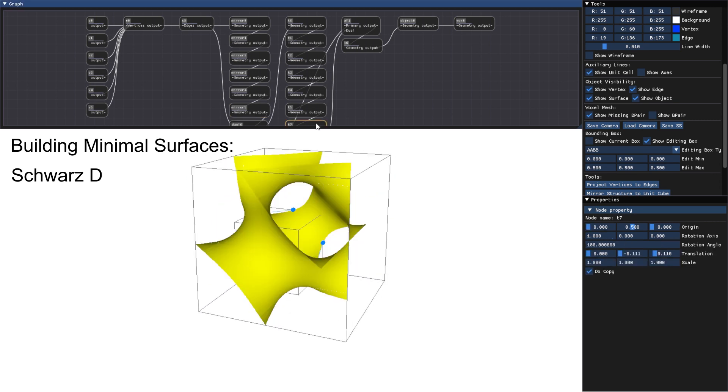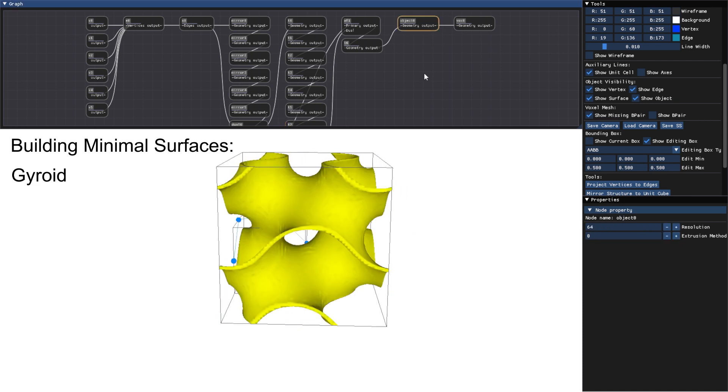This session shows the construction for three of the most popular minimal surfaces: Schwartz-P, Schwartz-D, and the gyroid.